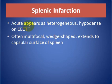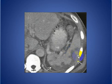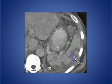Splenic infarction, acute, appears as heterogeneous and hypodense on contrast-enhanced CT scan, often multifocal, wedge-shaped, extending to the capsular surface of the spleen. As seen here on axial contrast-enhanced CT, multiple subcapsular hypo-enhancing foci in the spleen in a patient with portal hypertension due to splenic infarction.